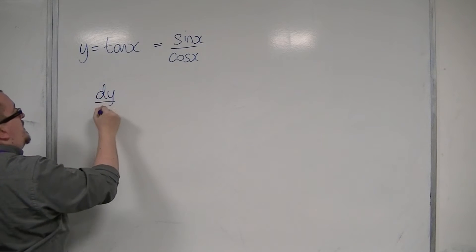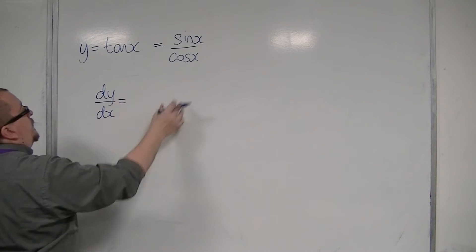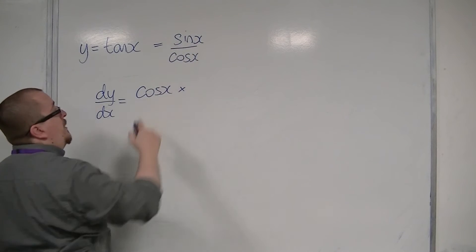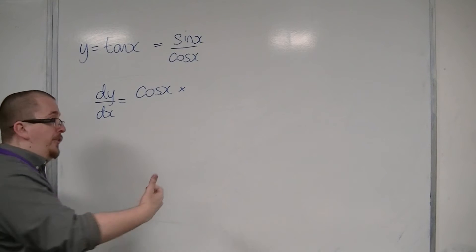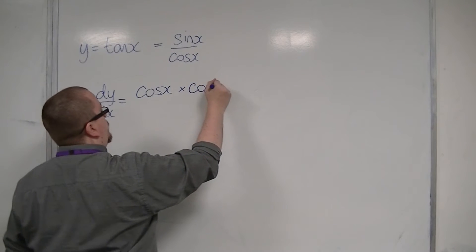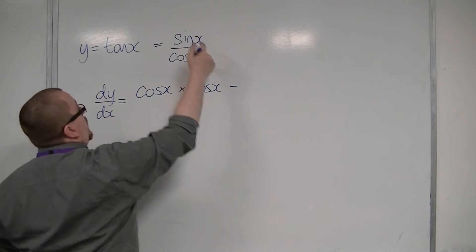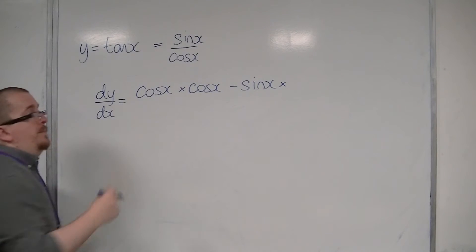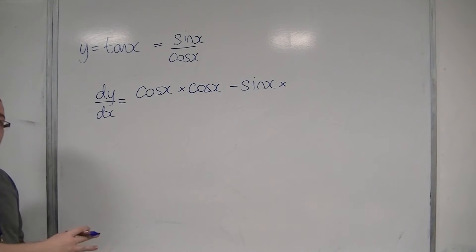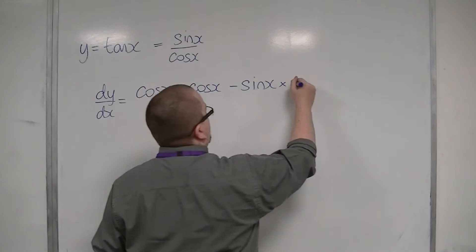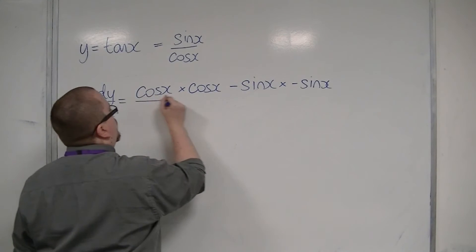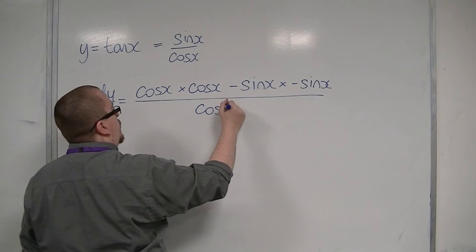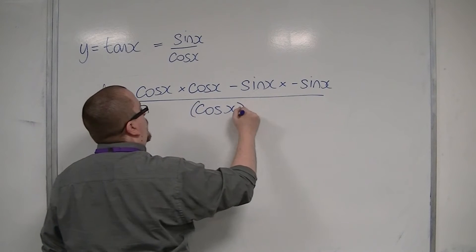So dy by dx, starting from the bottom: cos x times by the derivative of sine, which is cosine. Take away the top, so sine x, times by the derivative of the bottom. The derivative of cosine was minus sine. All over the bottom squared, so cos of x, all squared.